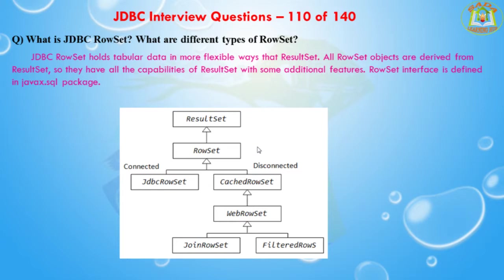Some additional features provided by RowSets are: they function as JavaBeans with properties and their getter and setter methods. RowSet uses JavaBeans events to model, and they can send notifications to any registered component for events such as cursor movements, updates, inserts, and deletes of a row. RowSet objects are scrollable and updatable by default, so if the DBMS doesn't support scrollable or updatable ResultSets, we can use the RowSet to get these features.